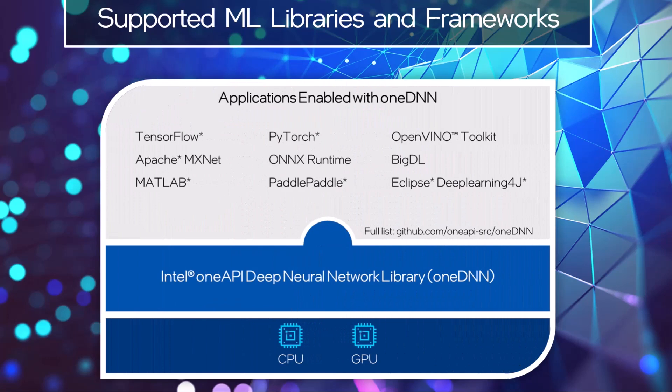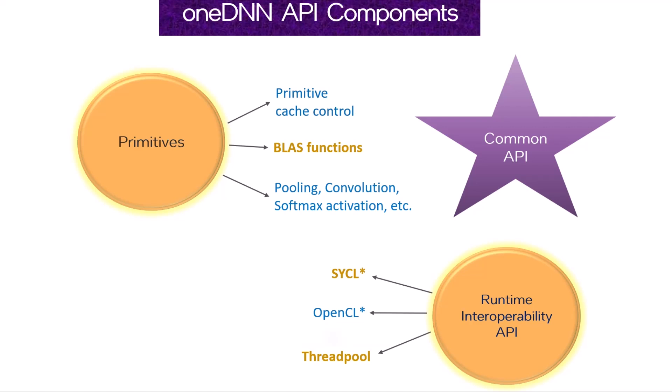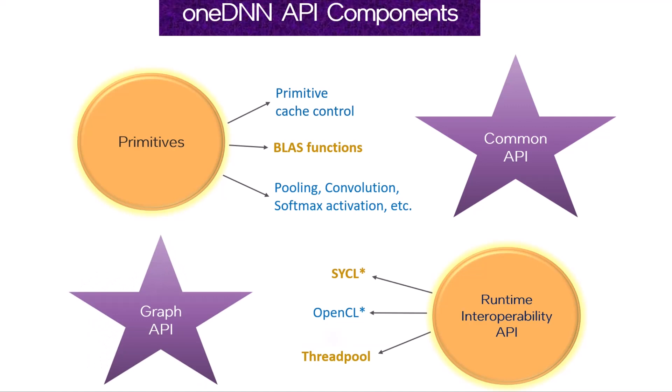OneDNN enables numerous optimized machine learning libraries and frameworks that help develop high performance deep learning applications on CPUs and GPUs. The library's API provides a set of primitive cache control functions, class functions, and several other primitive functions for operations such as pooling, convolution, and softmax activation. The common API includes utility functions for the abstract programming model of the library, a graph API for graph-based deep neural networks, and a Runtime Interoperability API that enables seamless integration with SYCL, OpenCL, and Threadpool frameworks.